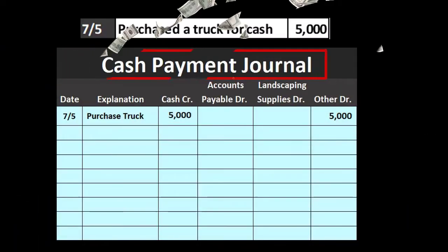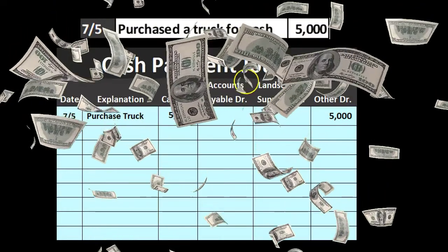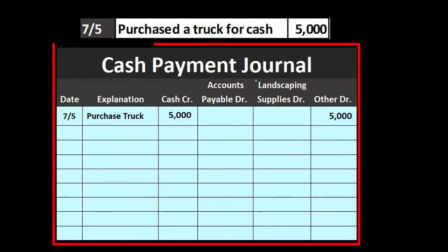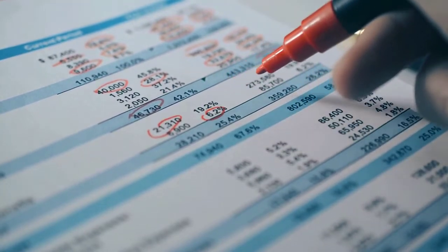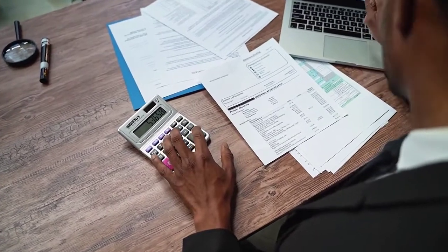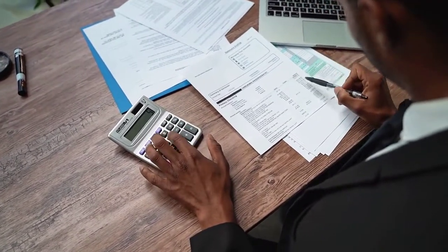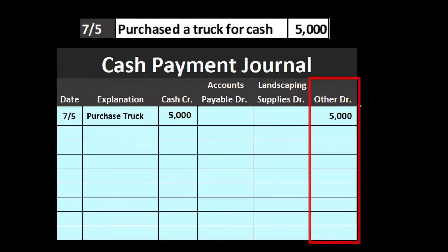The cash payment journal is one of the more confusing journals because there are many different things we pay cash for, and therefore we have more columns. If a transaction happens frequently, we might add a dedicated column for it. If it's a rare transaction — one that doesn't happen all the time — we just list it into the 'other' category. That 'other' category, once we do the journal entry, will need to be broken out into its component pieces.